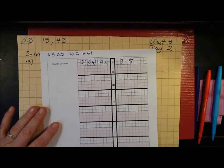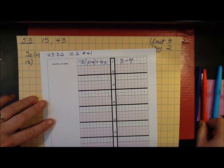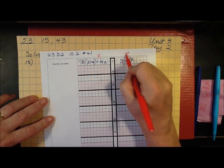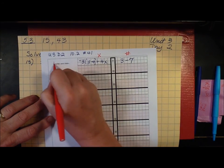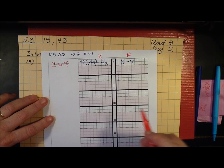Here's another problem. This is number 41. I'm going to make this variable side and this is the number side. First thing I'm going to do is combine like terms, CLT, and distribute.